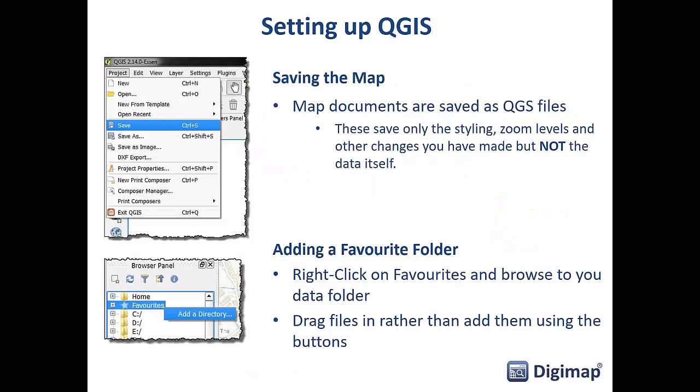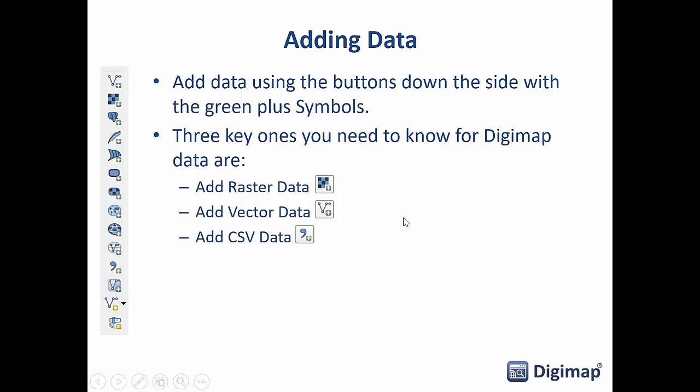When you save a map in QGIS — similar to ArcGIS — map documents are saved separately from the data as QGS files (.qgs extension), saving things like the zoom level and styling but not the data itself. You also get a browser panel where you can add your favourite folders for quicker access. You can drag and drop files into your layers panel — a lot of thought has gone into making this easy to use.